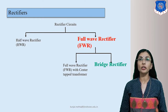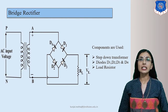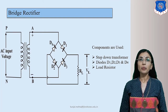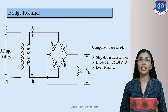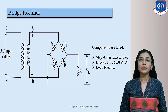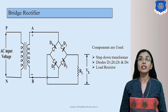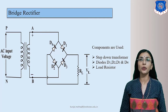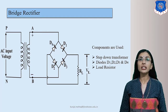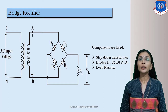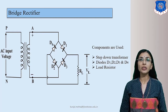Let's start with the circuit diagram and operation of the bridge rectifier. This is the bridge rectifier circuit diagram. The components used are a step down transformer, four PN junction diodes, and one load resistance RL. We apply 230 volt AC input voltage to the primary winding of the transformer. There is one bridge of four diodes, and we collect the output across load resistance RL.